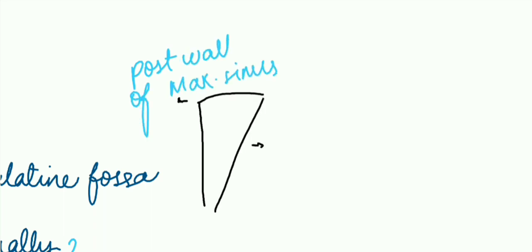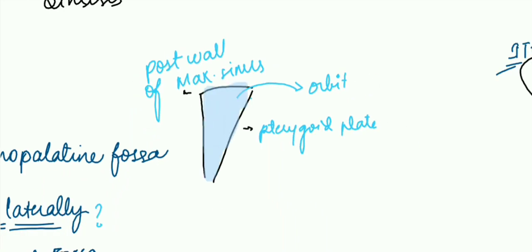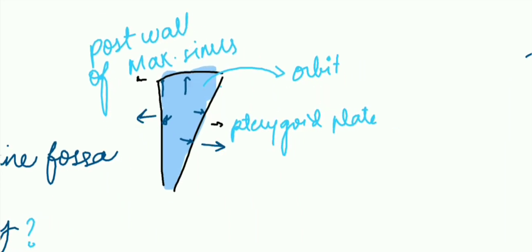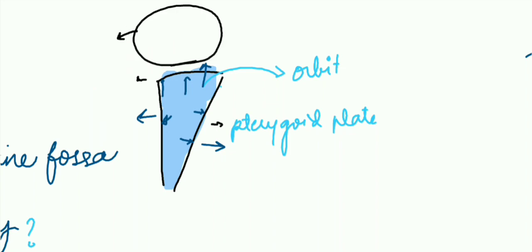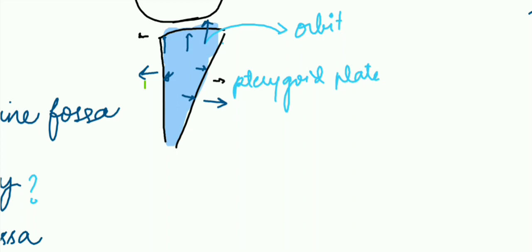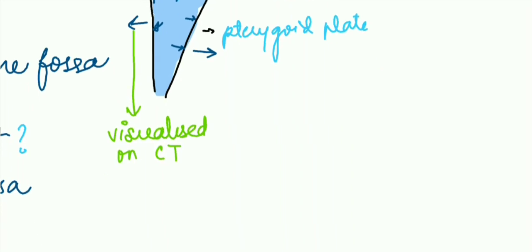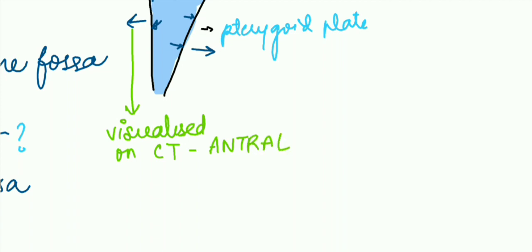A tumor which is growing within this narrow space can cause pressure on all of the three directions. Let us see what happens if there is pressure on the posterior wall of maxillary sinus. It can be visualized in CT, which is called the antral sign.